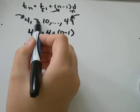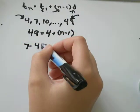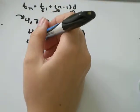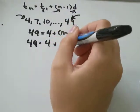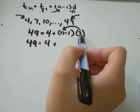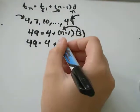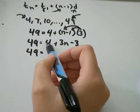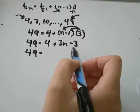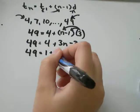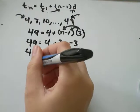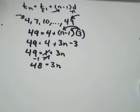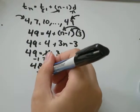And the common difference, all we need to do is take one term, do 7, minus whatever term is in front. 7 minus 4 would just be 3. And then simplify as much as you can. I'm going to use the distributive property to account for my 3 times n minus 1. So 3 times n would be 3n. 3 times negative 1 would be negative 3. And now 49 equals 4 minus 3 would be 1 plus 3n. So I'll subtract 1 from both sides to make the 1 go away. And I'll get 48 equals 3n. And when I do 48 divided by 3, I get n equals 16.